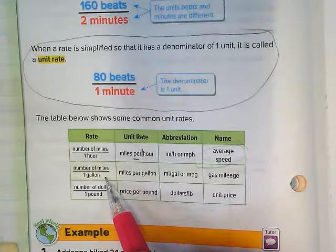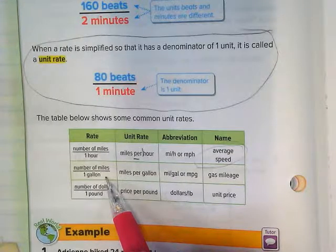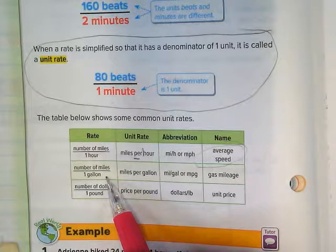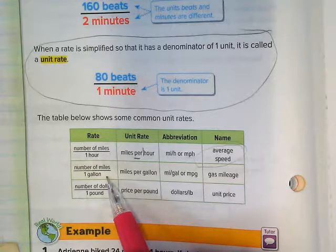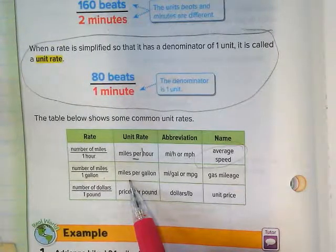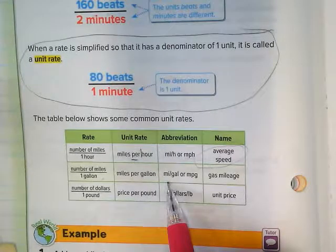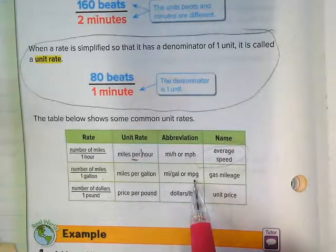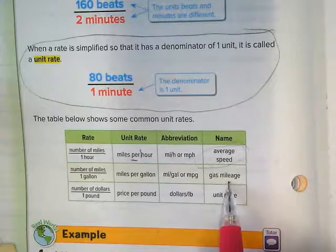You could also do miles over gallons, and this is when we're trying to figure out which cars get the best mileage, so you would pay less for gas. That's known as miles per gallon, abbreviated as MPG, and that's talking about gas mileage.